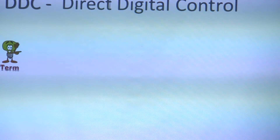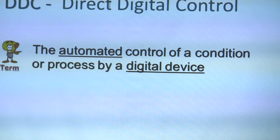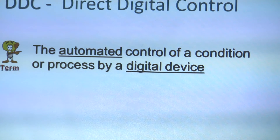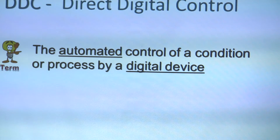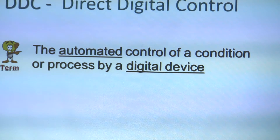What does DDC stand for? Direct Digital Control. The long definition: the automated control of a condition or process by a digital device. The reason I underline 'automated' and 'digital device' is because that is what it has to be. Automated — once I program it and tell it what it needs to do, it does it seamlessly in the background without me doing anything. Digital device — there's no moving parts, no air, no compressors. It's a computer, a digital device — microchips and processors.